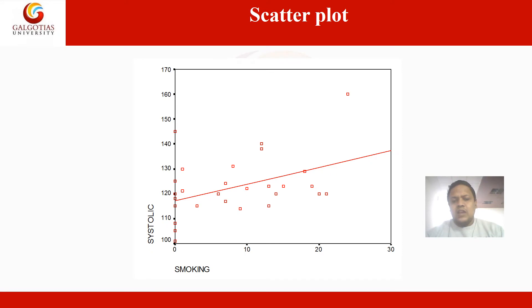In this slide, cigarettes smoked in a day are on the horizontal axis and blood pressure (BP) is on the vertical axis. There is a positive relationship between BP and number of cigarettes smoked: as the number of cigarettes smoked per day increases, there is a higher chance of high BP. We have taken a line of fit to better represent the scatter plot diagram, and it depicts the positive relationship between these two variables.